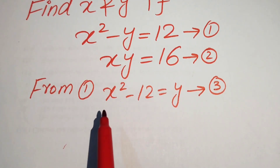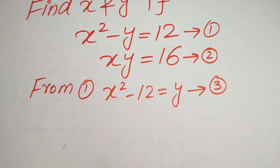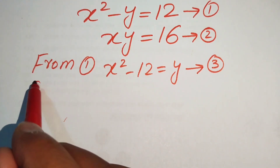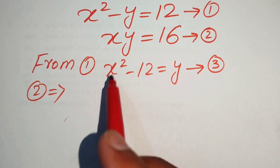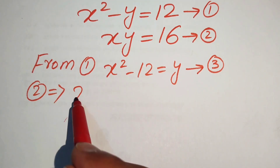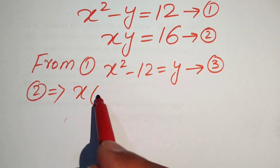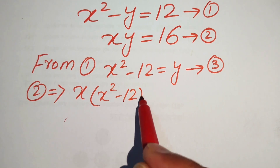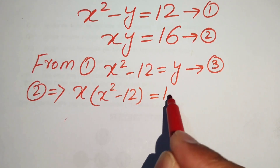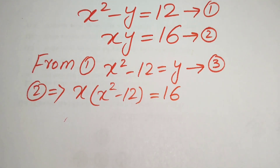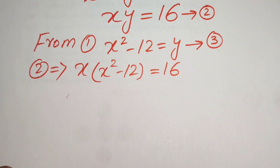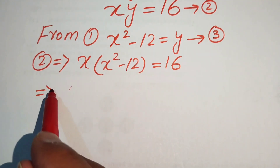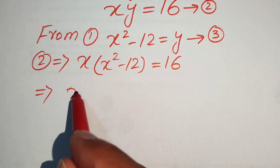Now we substitute this value of y into equation number two. Equation two becomes x times (x squared minus 12) equals 16. We multiply x through both terms.